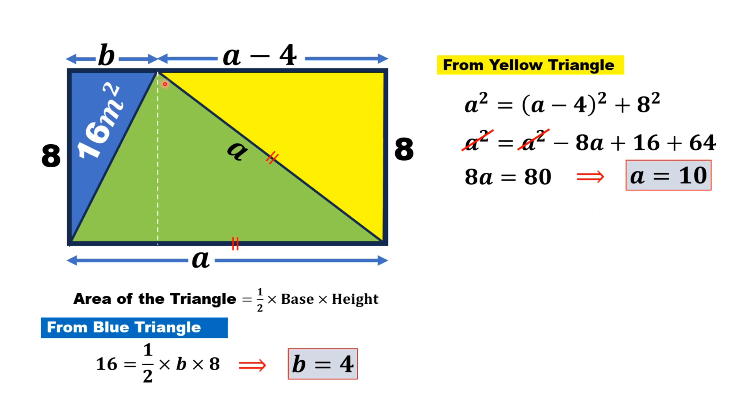Now, let's draw this altitude in the green triangle and call it H. It's very clear that this height H equals 8 meters.